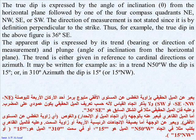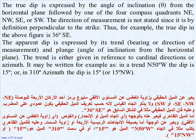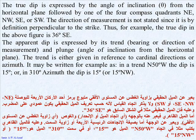The true dip is expressed by the angle of inclination, theta, from the horizontal plane, followed by one of the four compass quadrants: northeast, northwest, southeast, or southwest. The direction of measurement is not stated since it is, by definition, perpendicular to the strike. Thus, for example, the true dip in the above figure is 36 degrees southeast. The apparent dip is expressed by its trend (bearing or direction of measurement) and plunge (angle of inclination from the horizontal plane). It may be written, for example, as: in a trend north 50 degrees west, the dip is 15 degrees; or in 310 degrees azimuth, the dip is 15 degrees northwest.